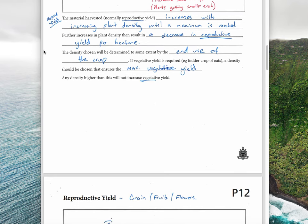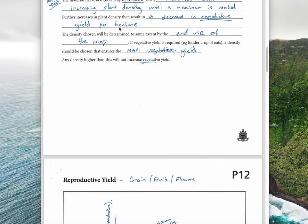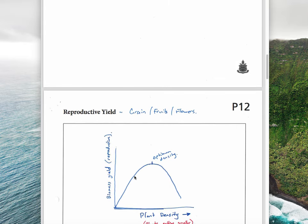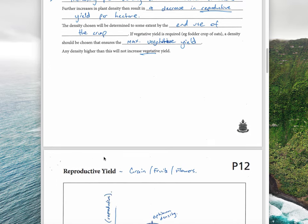Now we move on to reproductive yield. The material harvested, which often is reproductive yield in a plant - harvest fruit or grain - increases with increasing plant density until a maximum is reached. Further increases in plant density then result in a decrease in reproductive yield. It rises with increasing density, gets to an optimum density, and then drops off again.